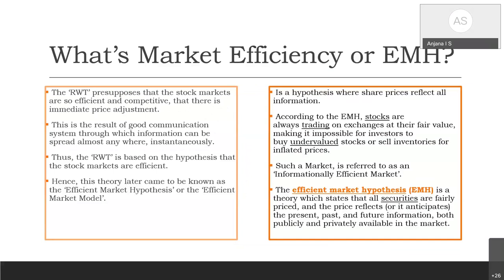Moving on to market efficiency: starting with Louis Bachelier's findings that commodity prices moved randomly, later economists such as Working, Calls, and Jones found that stock prices also moved randomly. Contributions by Karl Pearson, Kendall, Paul Cootner, and Eugene Fama provided strong evidence that stock prices move randomly. The random walk theory presupposes that stock markets are so efficient that there is immediate price adjustment — every information available in the market is immediately reflected in stock prices.